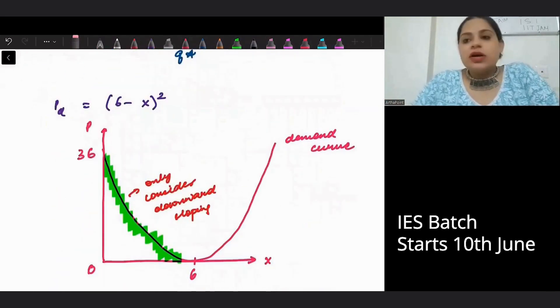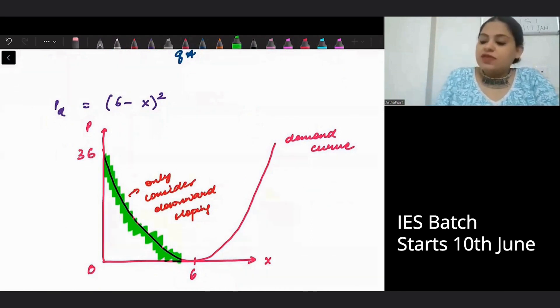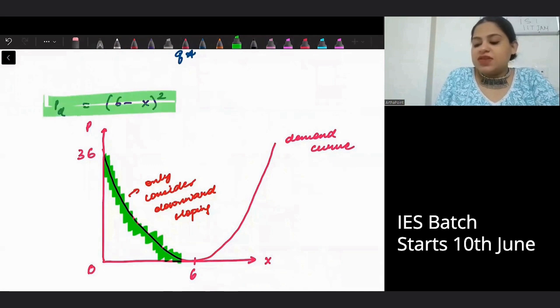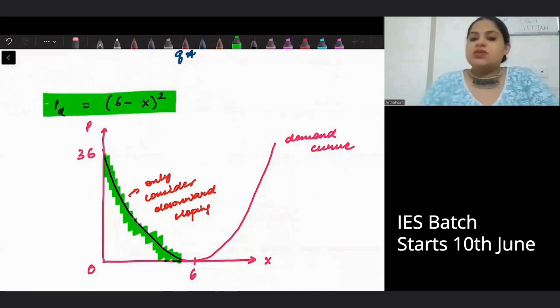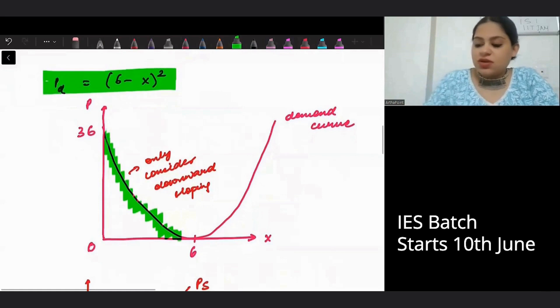Now, look at the demand curve given to you in this case. The demand curve given to you is 6 minus x whole square. This is a parabola. This is how this parabola looks like.